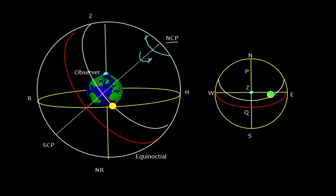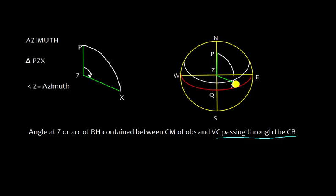At any given time, angle Z is the azimuth. To repeat: azimuth is the angle at the observer's zenith, or arc of the rational horizon, contained between the celestial meridian of the observer and the vertical circle passing through the celestial body.